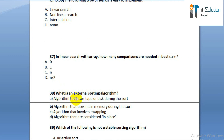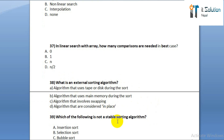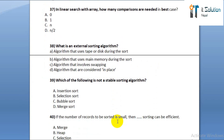Question number thirty-eight: what is an external sorting algorithm? Option A: algorithm that uses tape or disk during the sort. Option B: algorithm that uses main memory during the sort. Option C: algorithm that involves swapping. Option D: algorithm that is considered in-place.